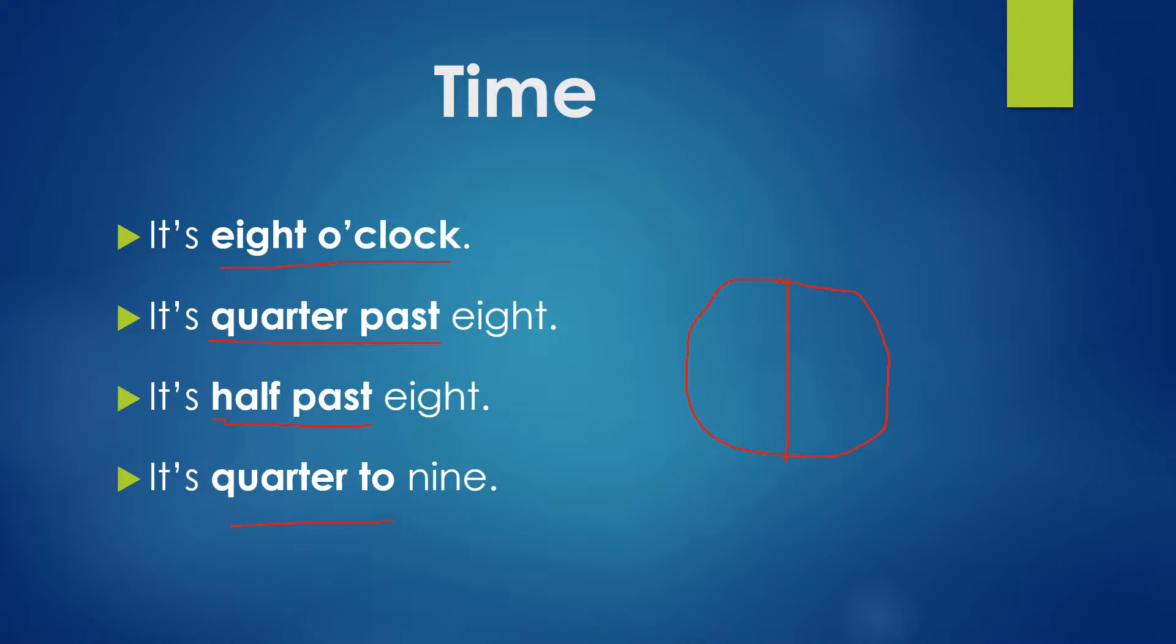If this is a clock and the big hand is at 9 and the small hand is between 8 and 9, so it means that 15 minutes are remaining to 9. We can say this in English like it's quarter to 9.